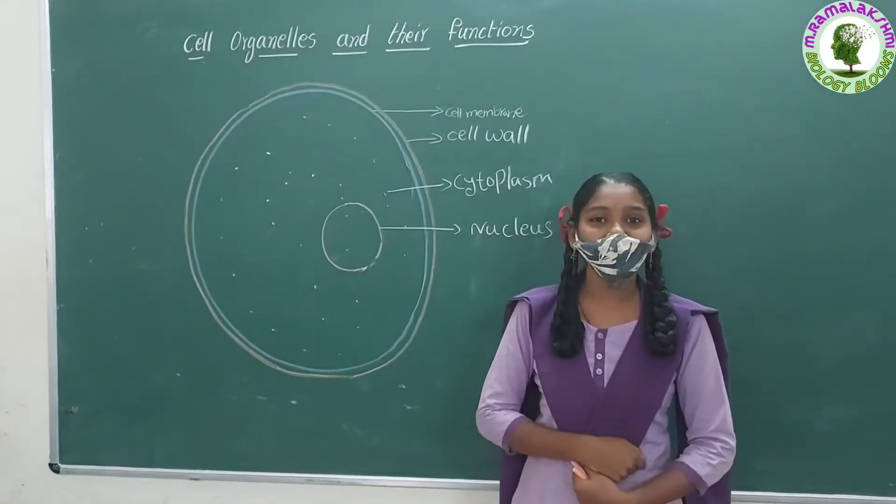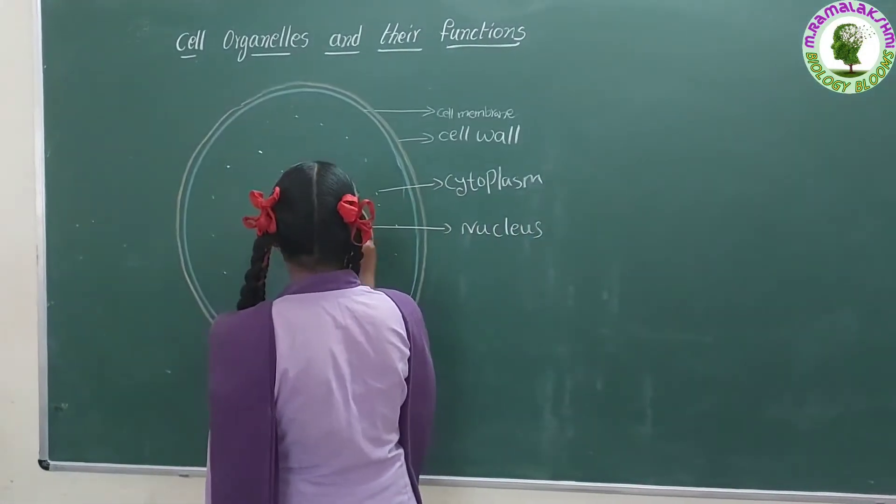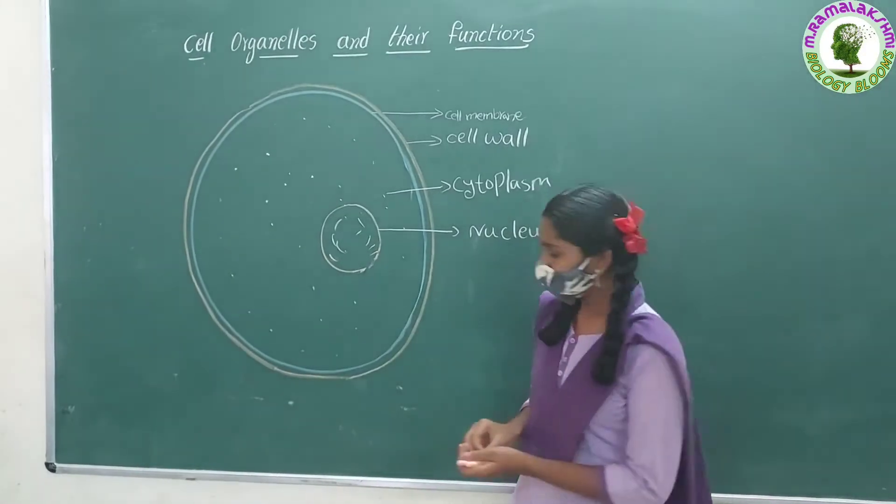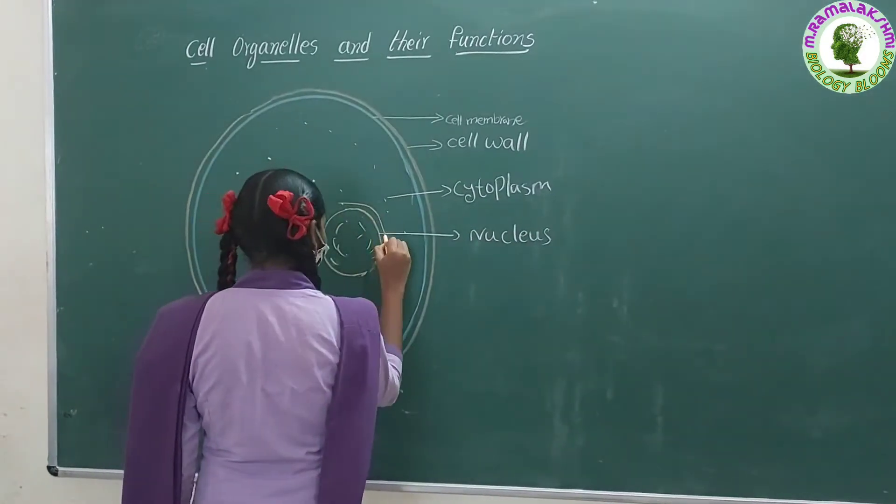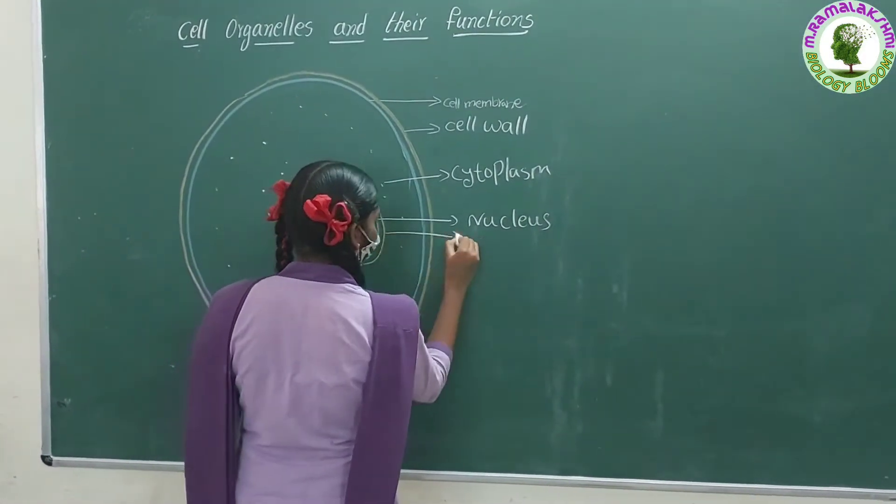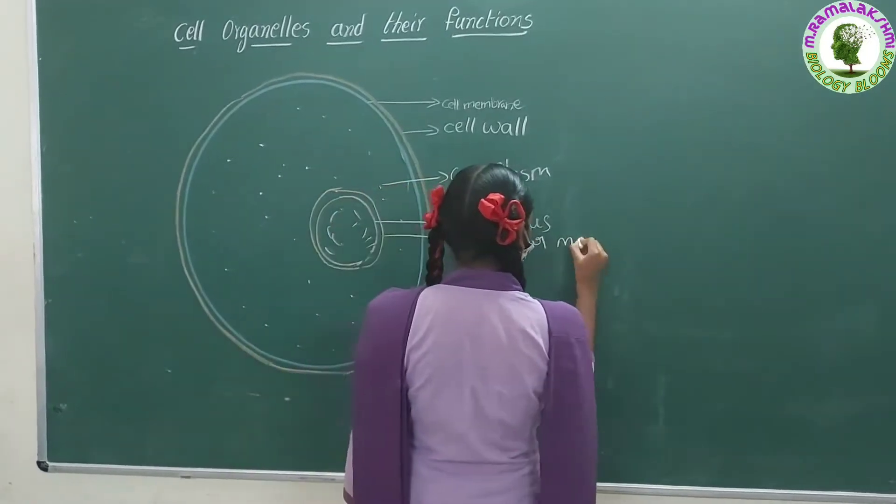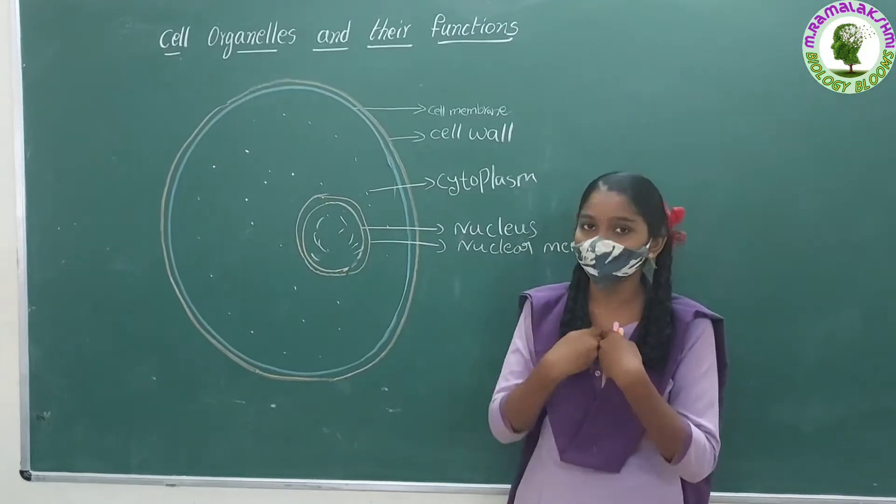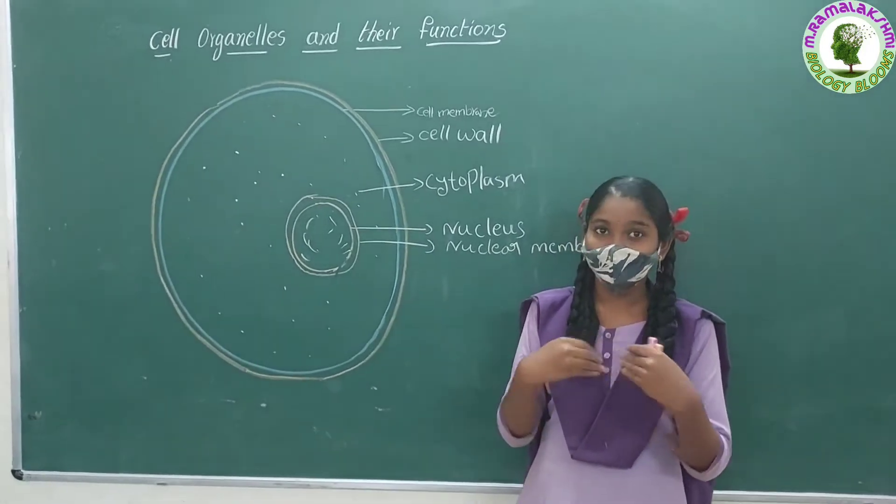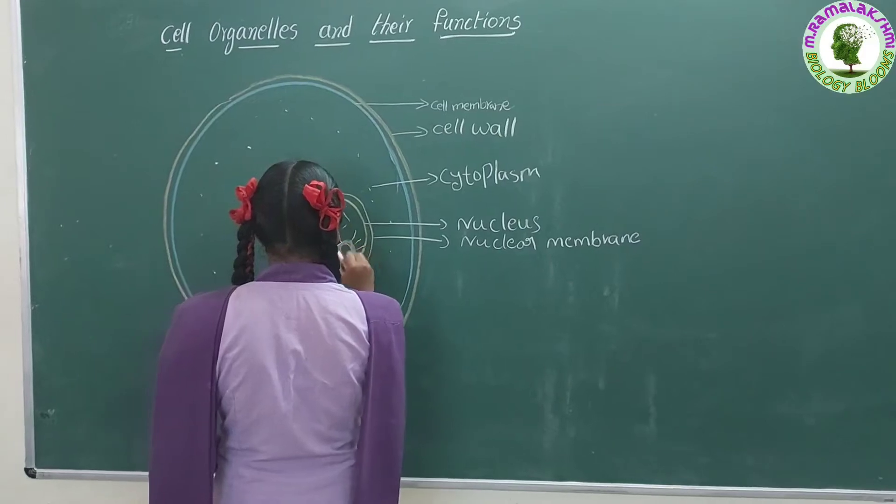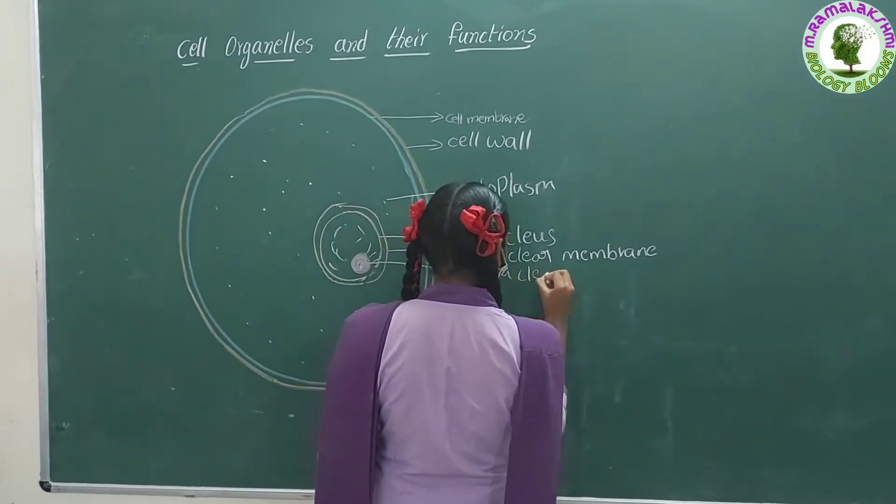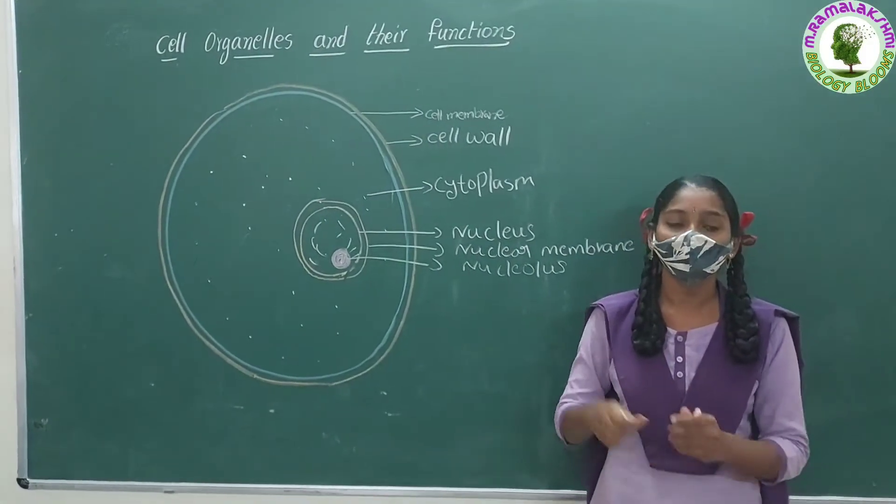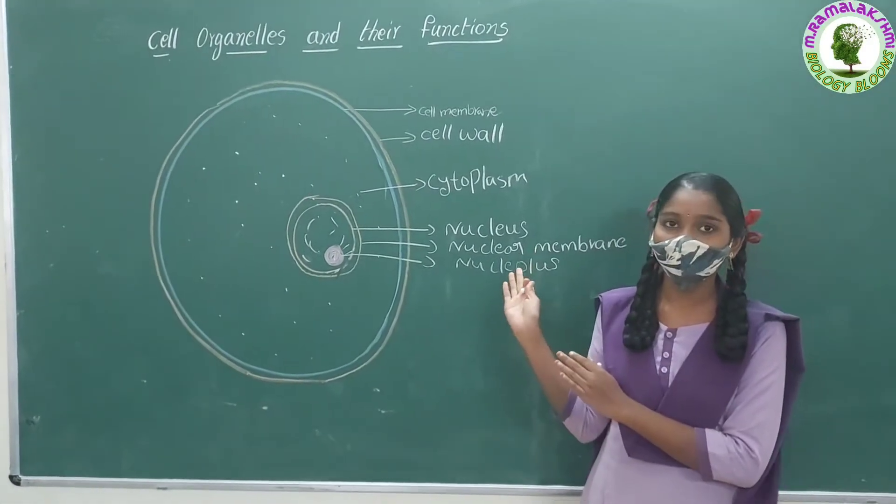I am nucleus. I contain genetic material and am considered to be the control center of the cell. I am enclosed by a nuclear membrane. It controls what enters and exits to me. I am involved in cell division. The nucleolus, which is located inside of me, produces ribosomes.